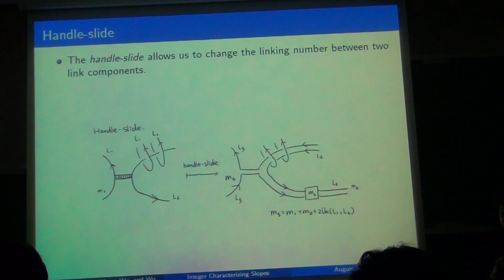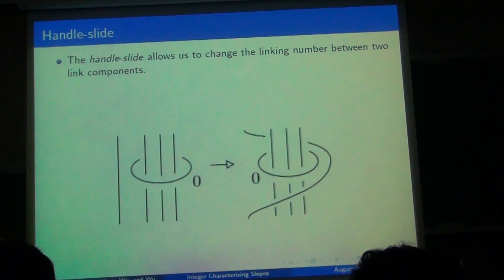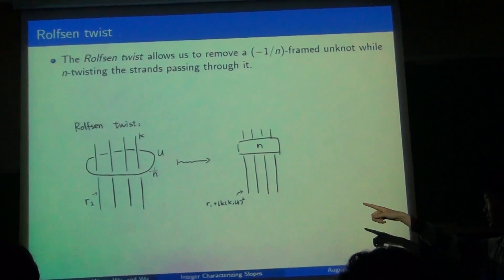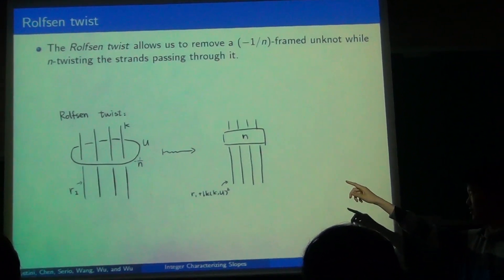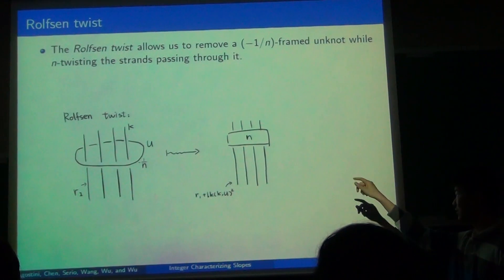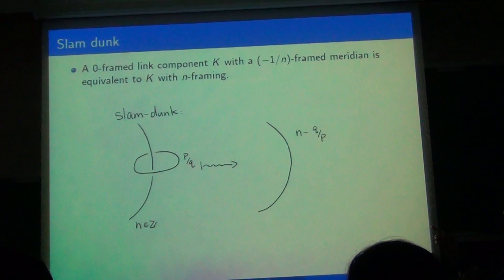And so the point is that these moves preserve the surgery. And given any three-manifold, you can traverse between all of the diagrams that give that three-manifold using those moves. So first is the handle slide, where you can slide one component parallel to another. And the effect is that you can change the linking number between the two components. Next is the blowup and twist.